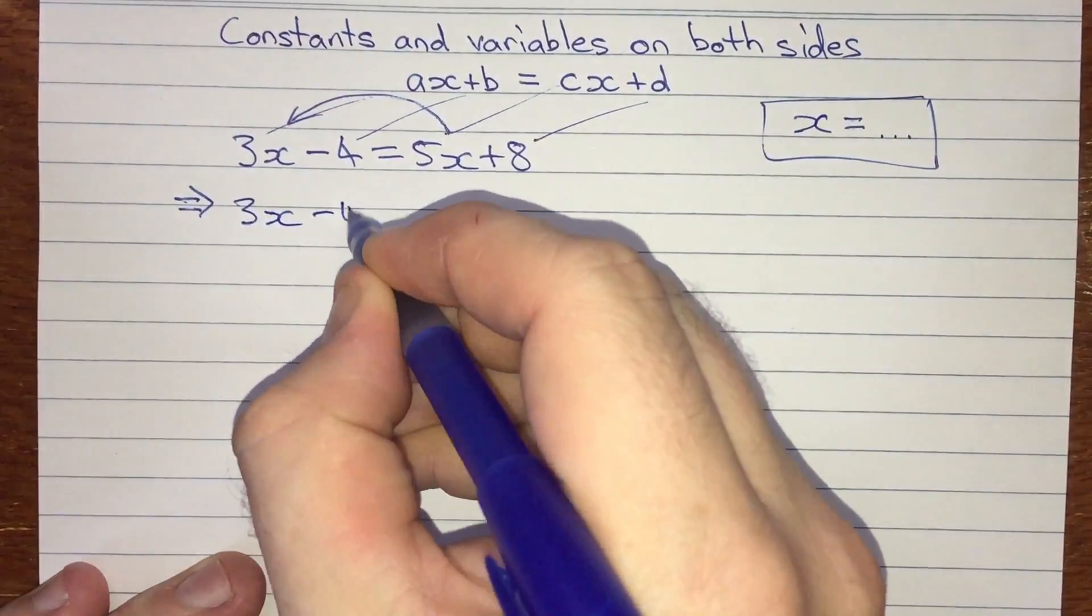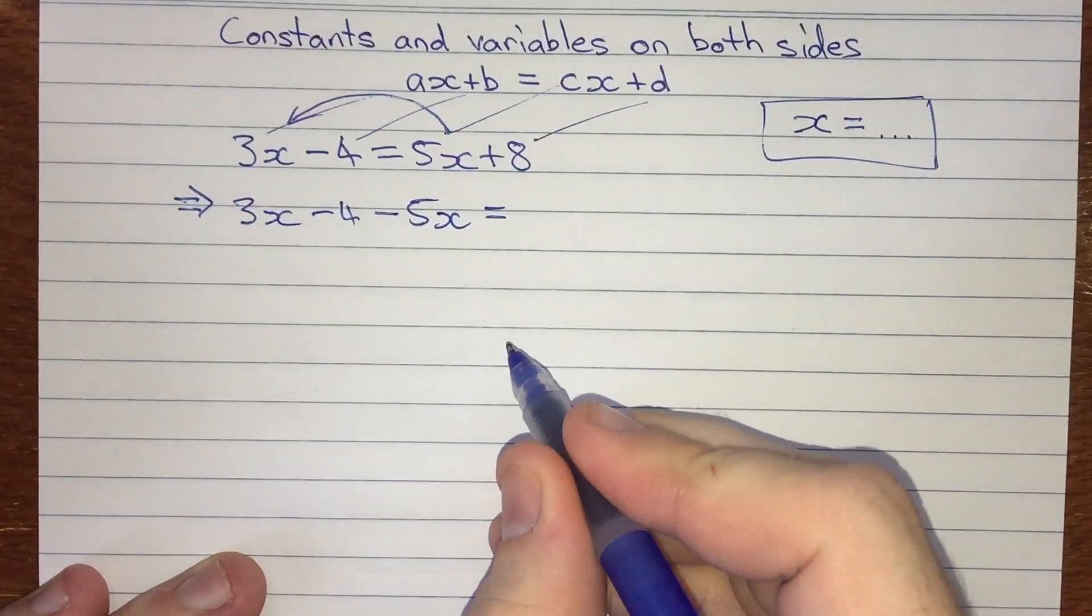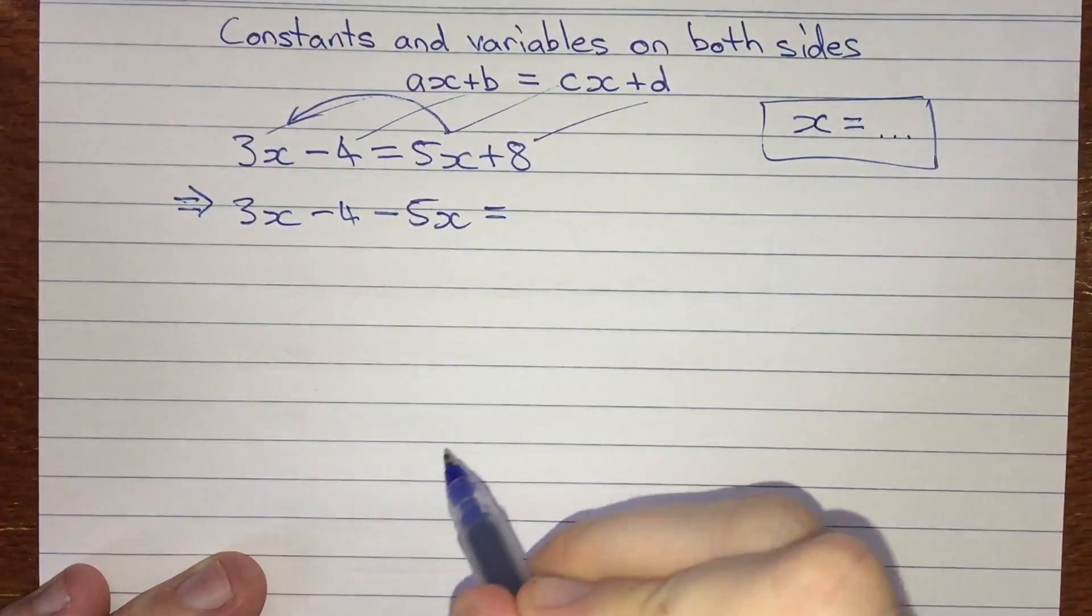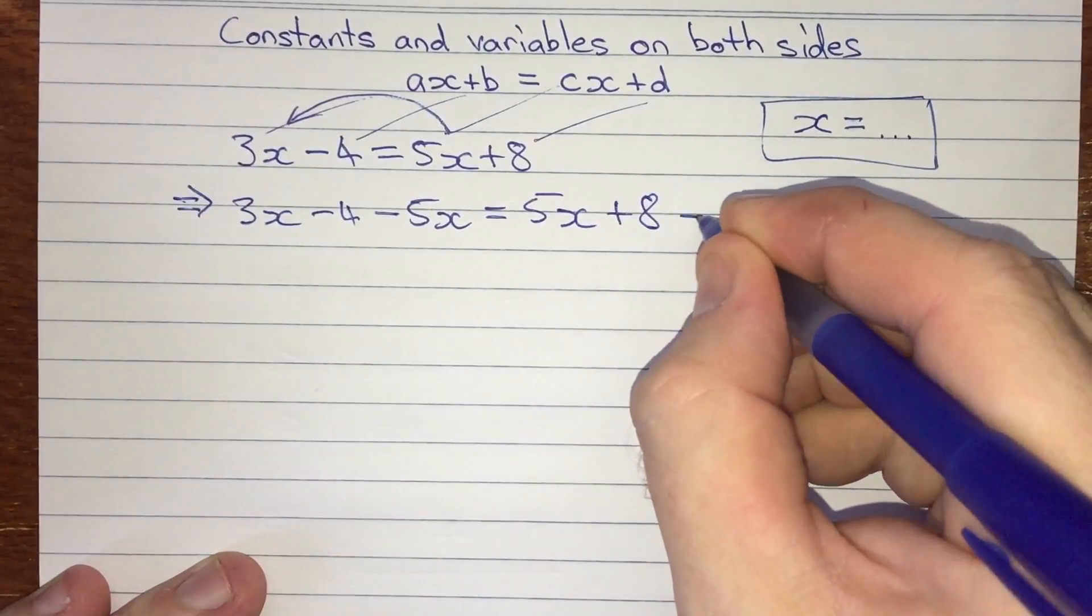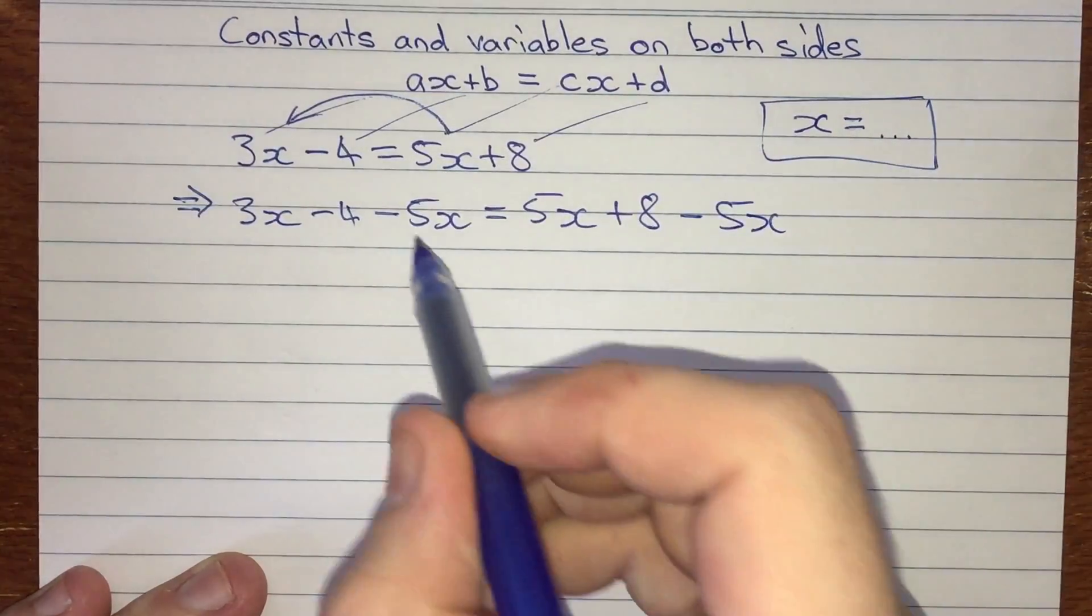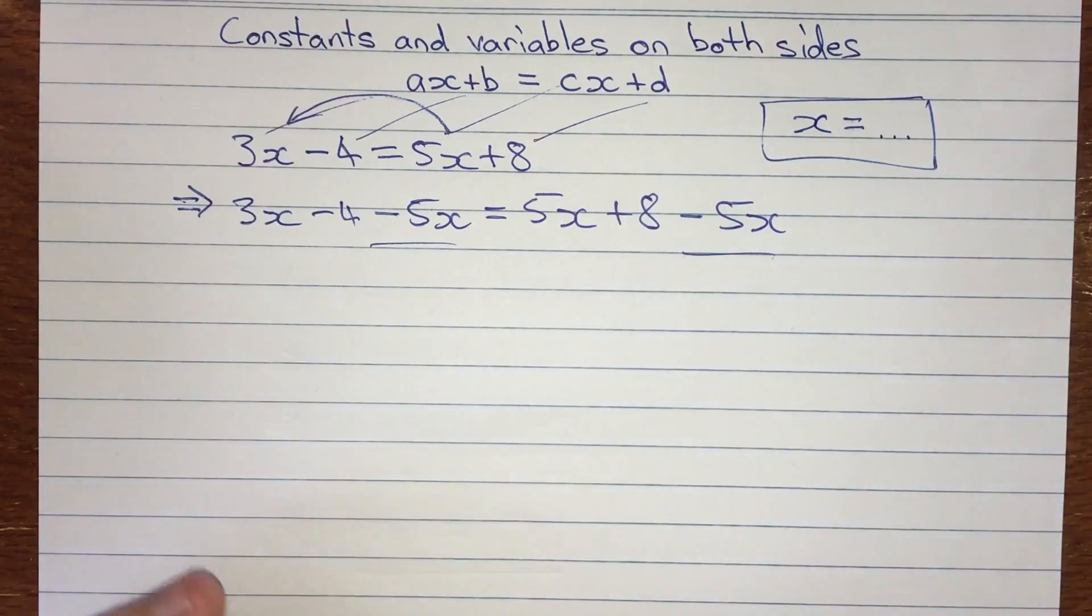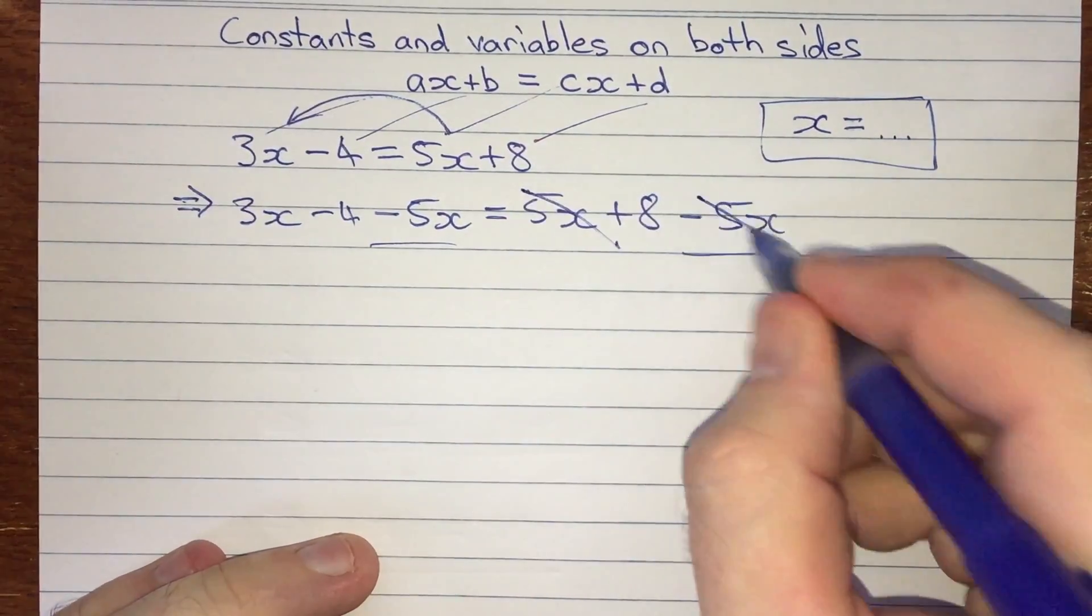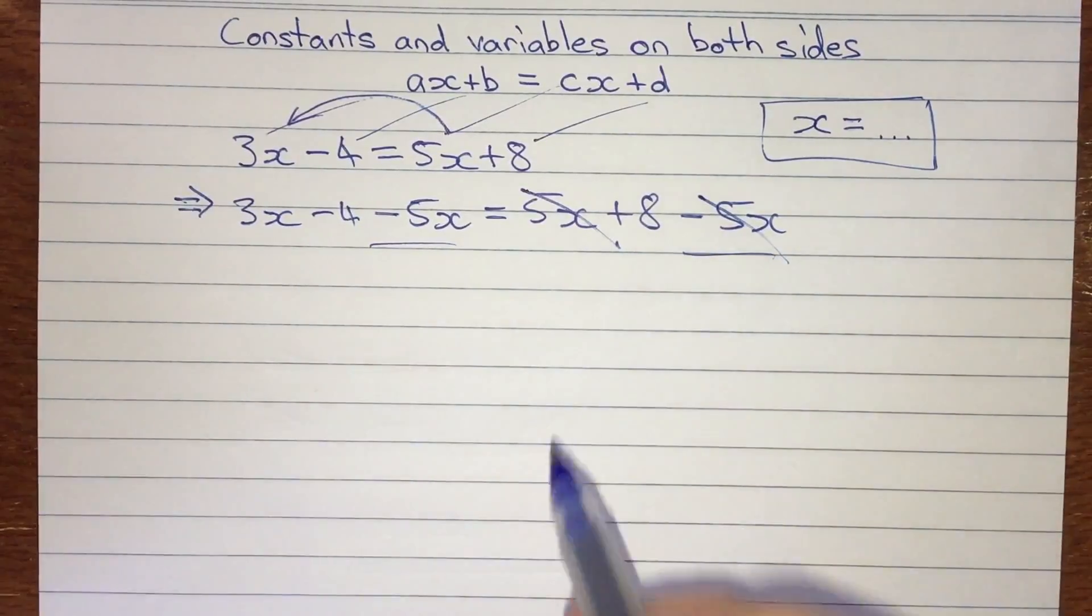I'm going to go 3x minus 4, just like I've got already, and I'm going to take away 5x. And the reason why I'm taking it away is because I want to get rid of it from the right side. So I've got 5x plus 8, and I'm going to take away 5x. So I've got the 5x taken away from both sides, so I've done the same thing to both sides. I haven't changed the equation in reality, just what it looks like. I'm going to change what it looks like by getting rid of those two, because they cancel each other out. Plus 5x minus 5x gives me 0.